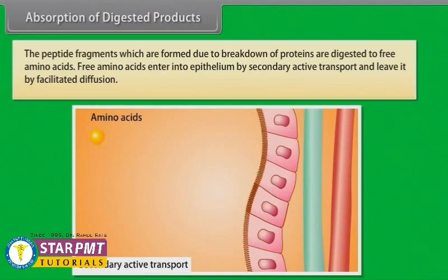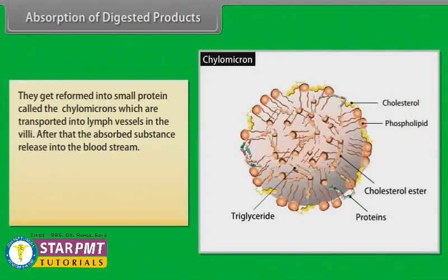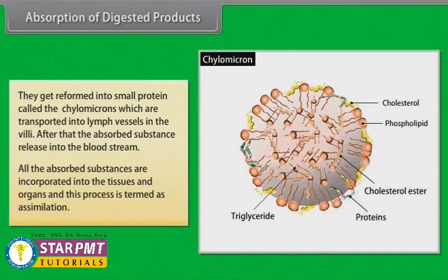Free amino acids enter the epithelium by secondary active transport and leave by facilitated diffusion. Fatty acids and glycerol are transported in the form of small droplets called micelles, which move into the intestinal mucosa and are reformed into small protein particles called chylomicrons, transported into lymph vessels in the villi. The absorbed substances are then released into the bloodstream and incorporated into tissues and organs — a process termed assimilation.